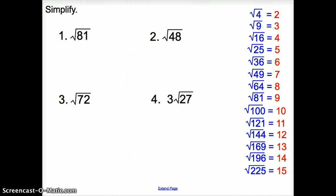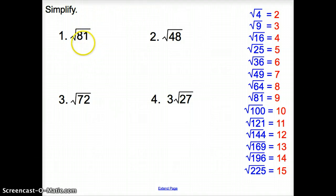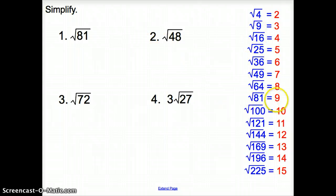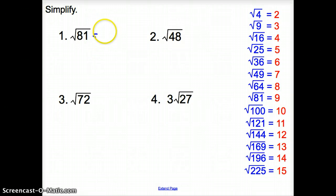What do these problems look like? With number 1, we are asked to simplify. The very first thing we want to do is see if we have 81 on our list, or whatever goes into 81 evenly. I found 81 on the list — the square root of 81 is 9, because 9 times 9 is 81.